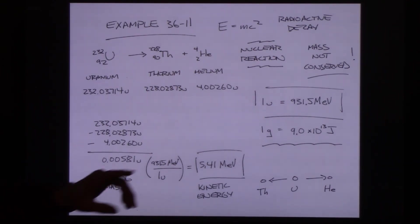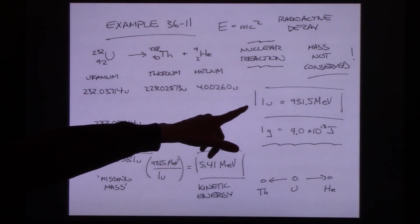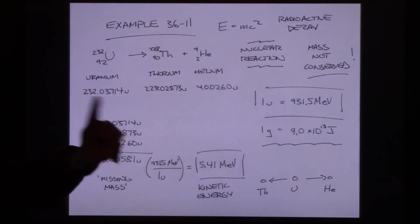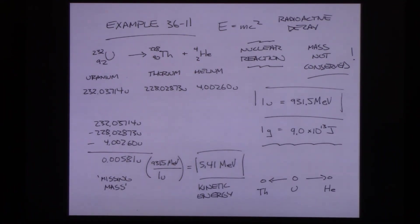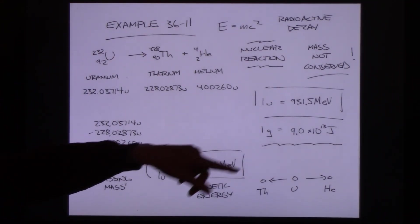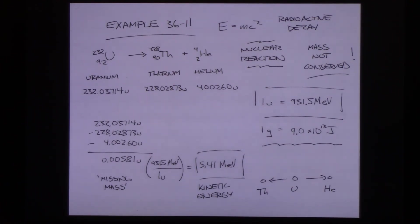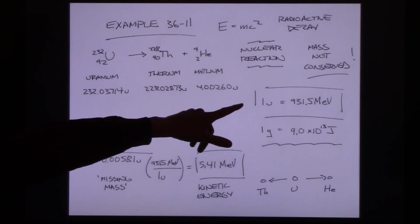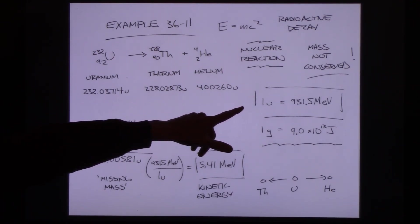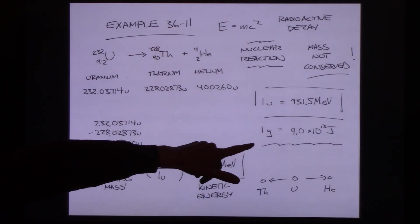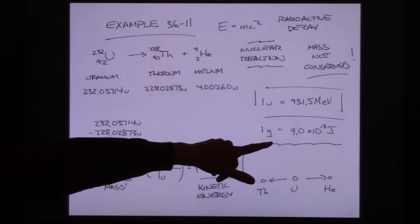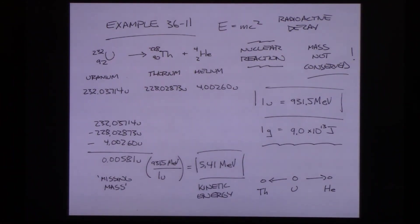Just for comparison: one atomic mass unit is about the mass of a proton or neutron, whereas one gram is an entire mole of protons and neutrons. One gram of material has an equivalent energy of 9 × 10¹³ joules.